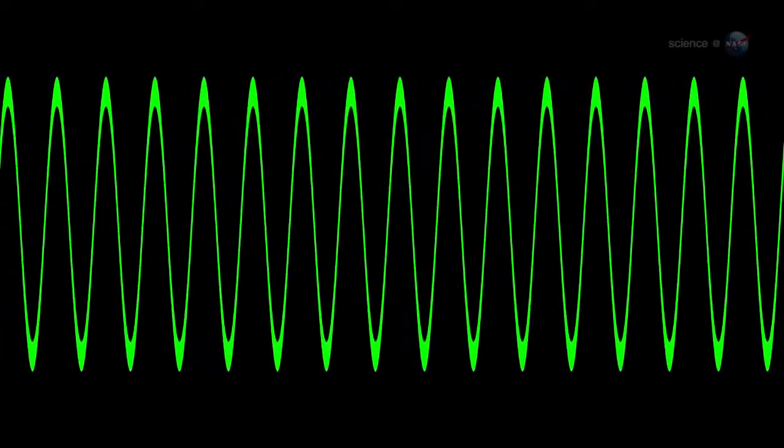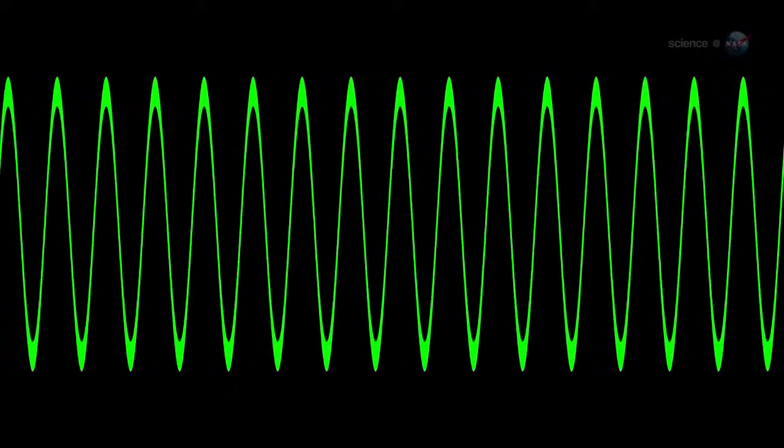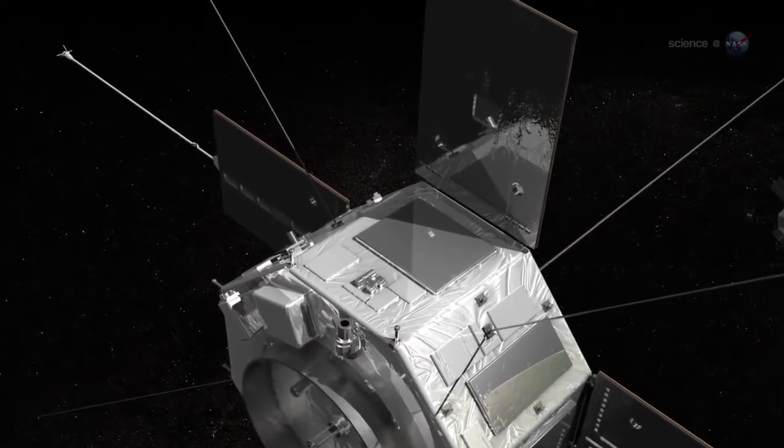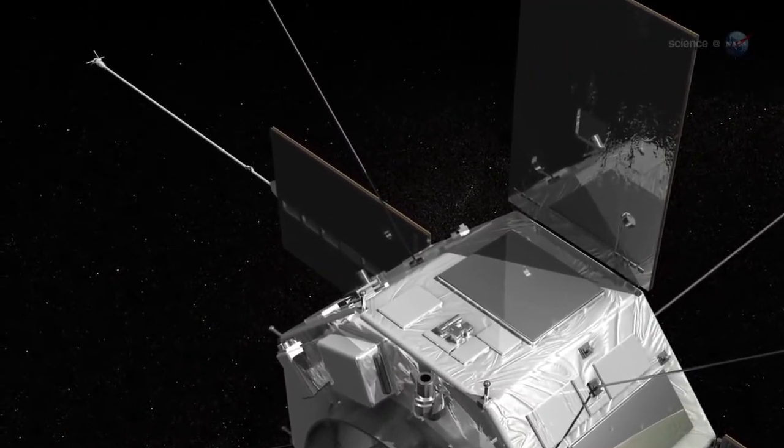He's careful to point out that these are not acoustic waves of the kind that travel through the air of our planet. Chorus is made of radio waves that oscillate at acoustic frequencies between 0 and 10 kHz. The long antennas of the radiation belt storm probes are perfect for detecting these kinds of waves.